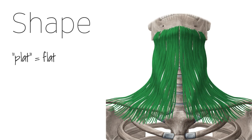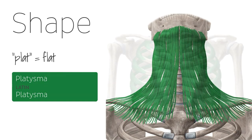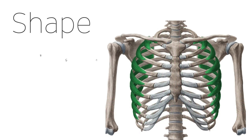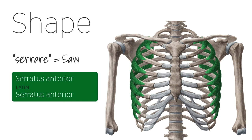The flatness of a muscle can also be used to derive its name, as is the case of the platysma, which gets its name from the French word plat, meaning flat. The Latin term serare, meaning saw, is also used when describing the shape of a muscle. For example, the serratus anterior muscle derives its name from this term due to the fact that its attachment onto the ribs sort of forms a serrated edge like a saw.